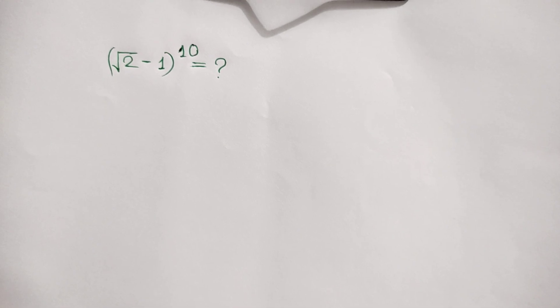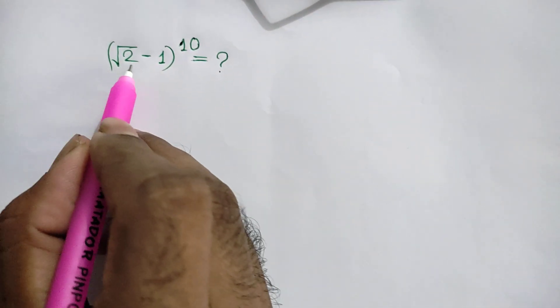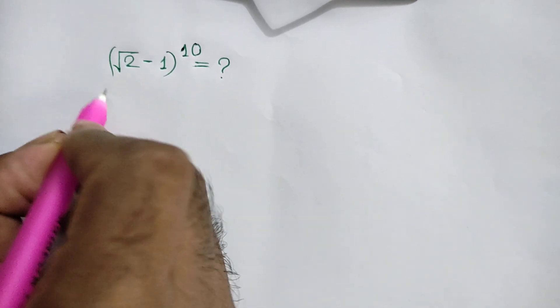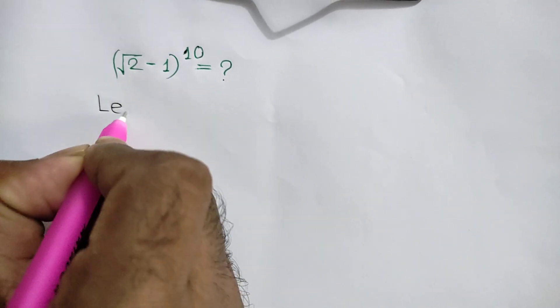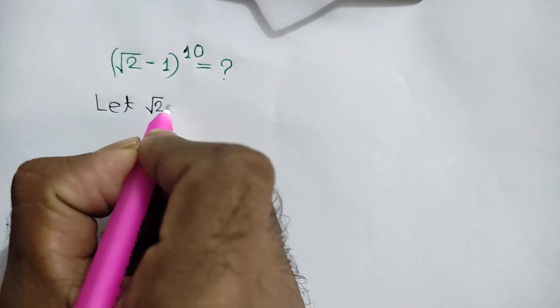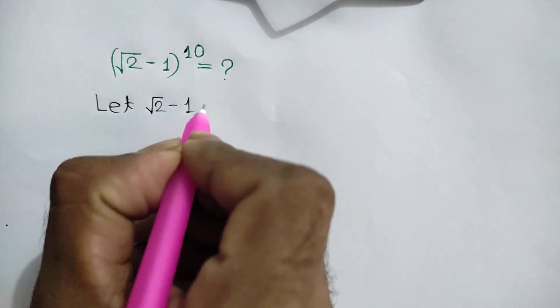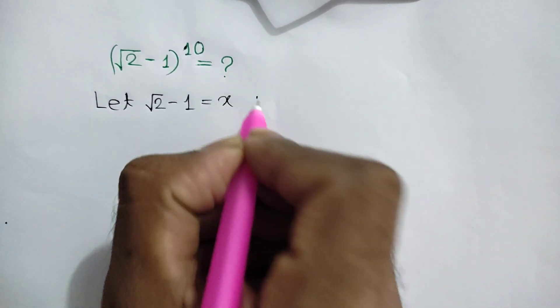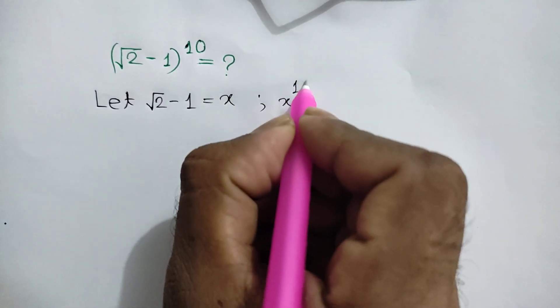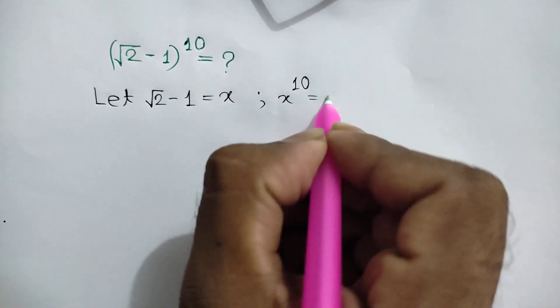Hi everyone. In this video I am going to show how to simplify this math problem: square root of 2 minus 1 to the power 10. Firstly, let square root of 2 minus 1 be equal to x. So, we need to find x to the power 10.